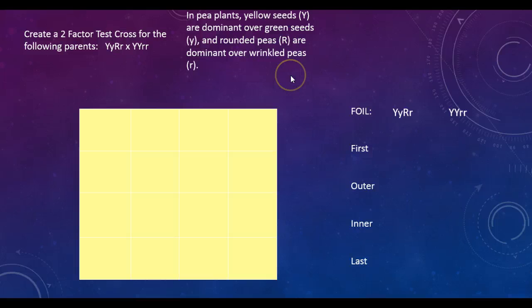Now we're going to set up our two-factor test cross for these two parents over here using FOIL. FOIL, once again, stands for first, outer, inner, last. And what that means is if we look at first, it's the first Y and the first R to make that allele combination big Y, big R, and we're going to put that up top. Our next one is outer, which is the outer Y and the outer R. And then inner, inner Y, inner R. And last is the last Y and the last R. Notice we put those right across the top here.